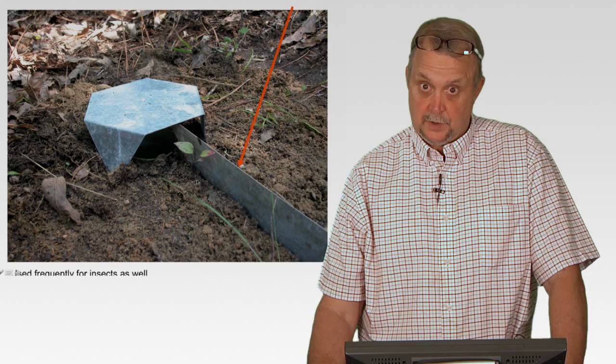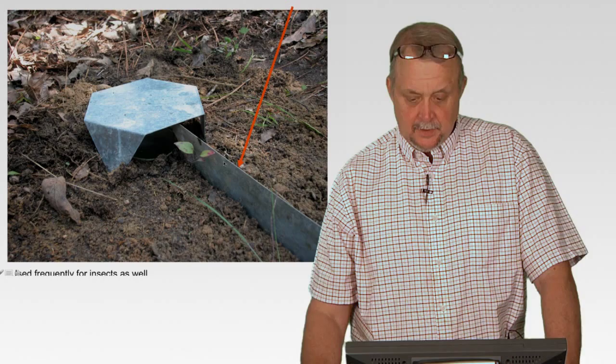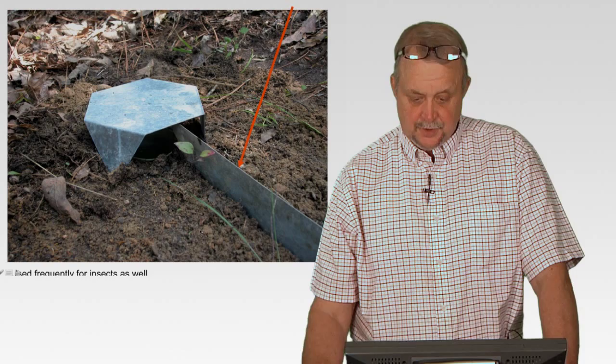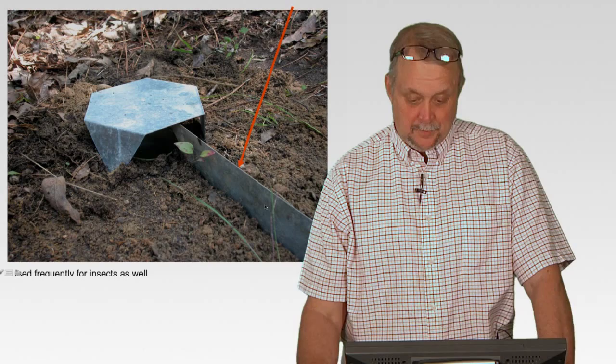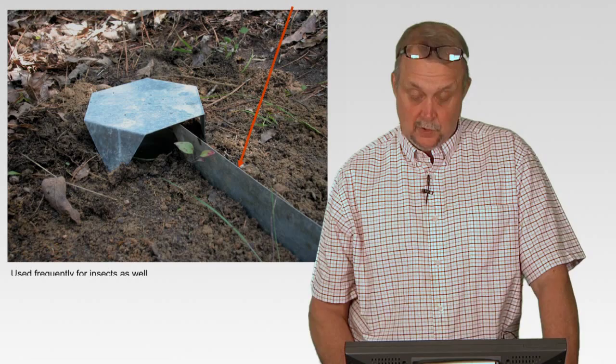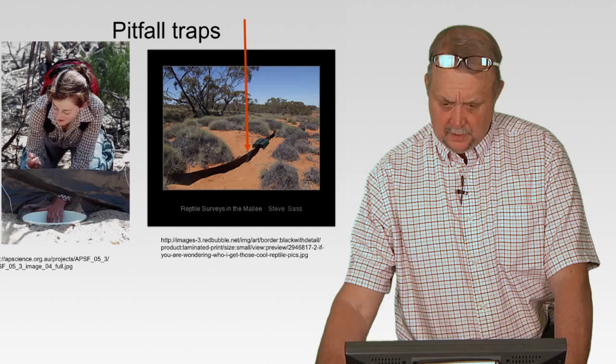Almost all pitfall traps — at least the ones that really work, especially for reptiles — have what they call a fence. Here you have some aluminum sheeting used as a fence leading up to the bucket. If the animal walks up to the fence and turns left, it's going to walk into the bucket. You would think they'd see the bucket and walk around it, but they don't seem to do that — that's one of the beauties of the method. If they turn right, there's going to be another bucket on the other side. I'll show you how to set up what we call an array with different fences.